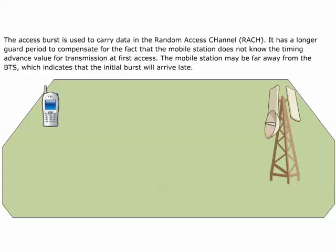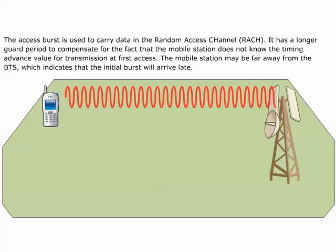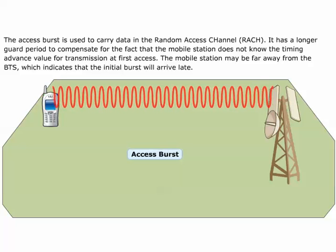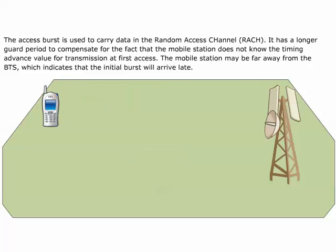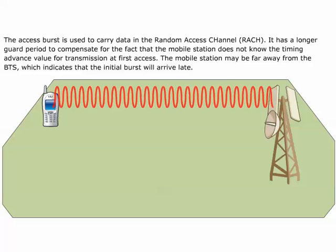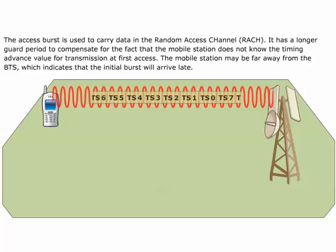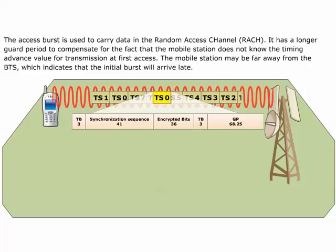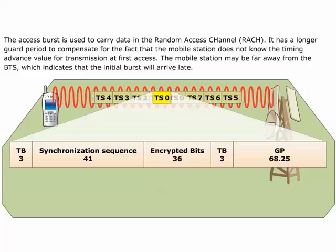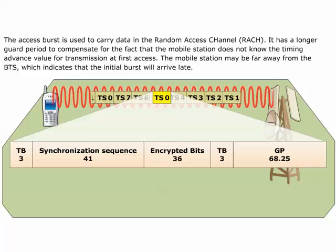The Access Burst is used to carry data in the Random Access Channel, RACH. It has a longer guard period to compensate for the fact that the mobile station does not know the timing advance value for transmission at first access. The mobile station may be far away from the BTS, which indicates that the initial burst will arrive late.